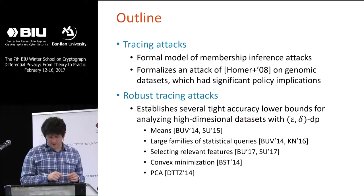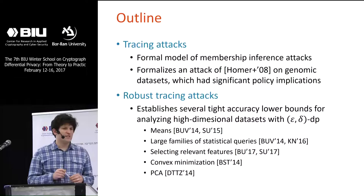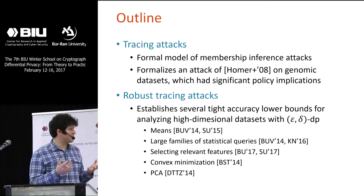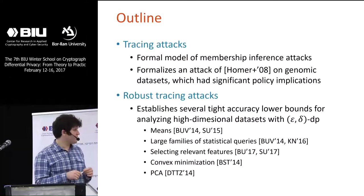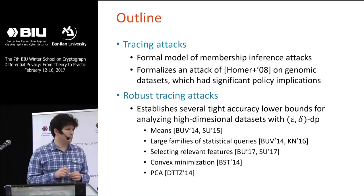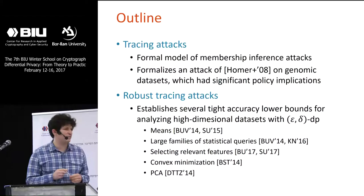In the second part of the talk, I'll cover what I call robust tracing attacks — how tracing attacks work in a setting where you add a large amount of noise. So instead of just releasing some statistics and hoping they're private, you've made some effort to make them private by adding noise. This is important because you'd want to determine how hard it is to prevent membership inference — how much noise has to be added.